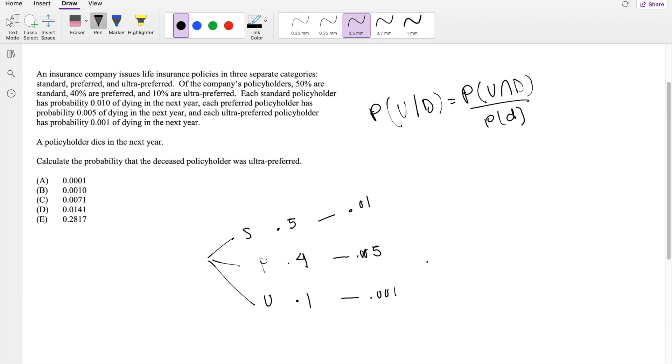Okay, that sounds kind of morbid, but it's okay. So probability that they're standard and dies next year is equal to 0.5 times 0.01, which is equal to 0.05. And likewise, I can multiply this across to 0.4 times 0.005 is equal to 0.002.